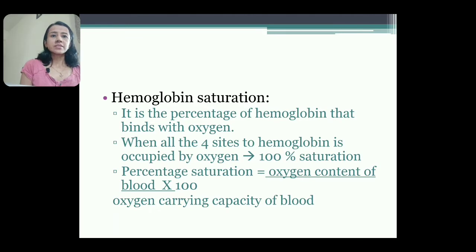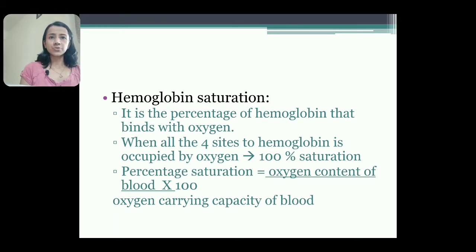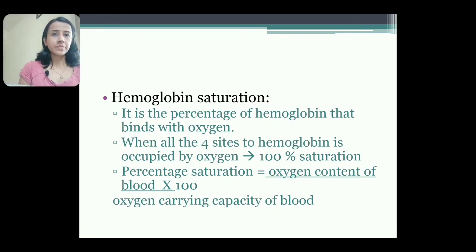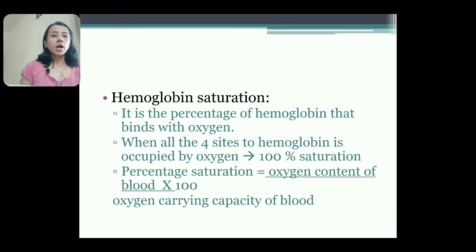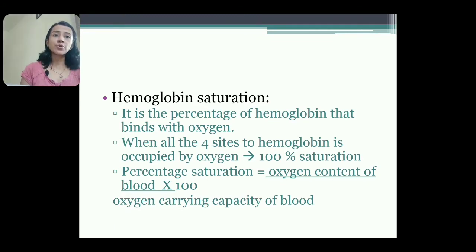Hemoglobin saturation is the percentage of hemoglobin that binds with oxygen. When oxygen is bound with all 4 sites of hemoglobin, that is 100% saturation. If only 3 sites are bound, that is 75% saturation. Percentage saturation is calculated as: oxygen content of blood divided by oxygen carrying capacity multiplied by 100. For example, oxygen carrying capacity is 19.5 ml (100%). If blood oxygen content is 15 ml, percentage saturation equals 15 divided by 19.5 multiplied by 100.